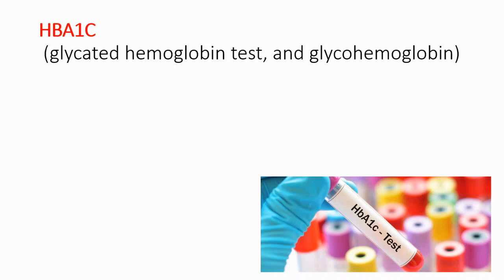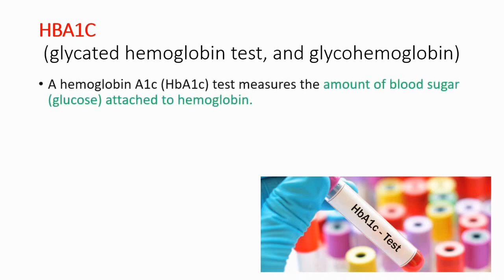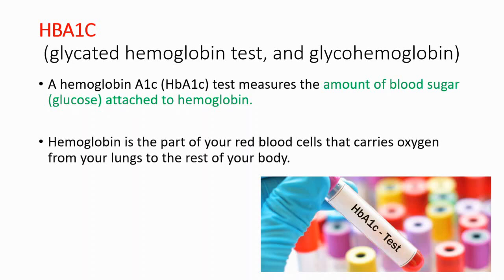Hey everyone, this is your daily dose of medicine. In this video, I will share what the hemoglobin A1C test is and why we do it. The hemoglobin A1C test, also known as the glycated hemoglobin or glycohemoglobin test, measures the amount of blood sugar attached to hemoglobin. Hemoglobin is the part of your red blood cells that carries oxygen from your lungs to the rest of the body.